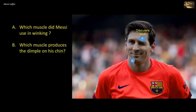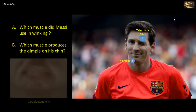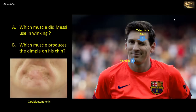Which muscle produces the dimple on the chin? This dimple is produced by a very small muscle attached to the skin called the mentalis muscle. Mentalis arises from the body of the mandible, anterior to the roots of the inferior incisors, and is attached to the skin of the chin. It forms the mentolabial sulcus and elevates the skin of the chin. Its excessive contraction results in the cobblestone appearance of the chin.